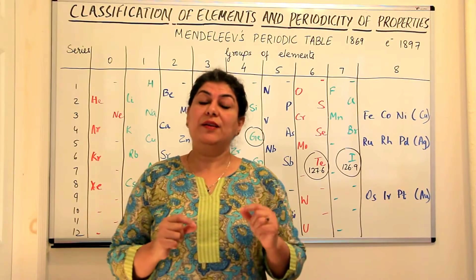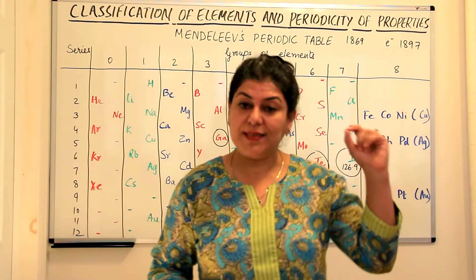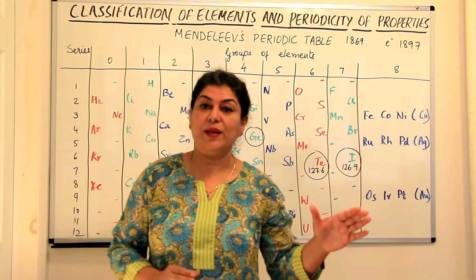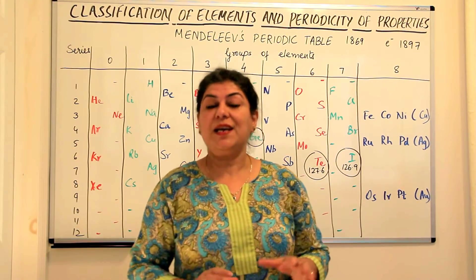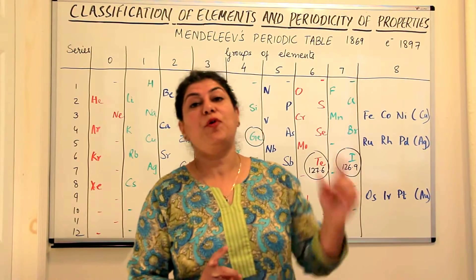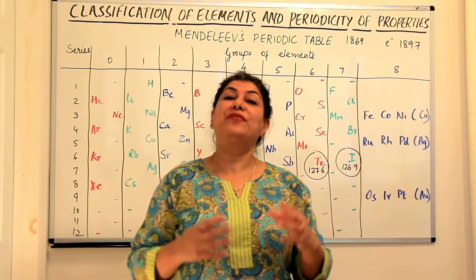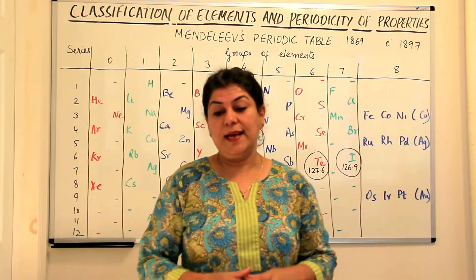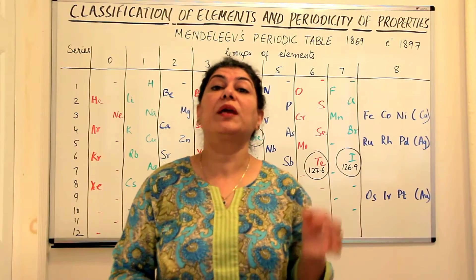Mendeleev said that if you arrange these elements according to their increasing atomic masses, we do find a periodicity — that is, we find that after certain intervals, the properties of elements are a repetition of the properties of the first one. But unlike Newlands, who said the properties are repeated after every eighth element, Mendeleev said the periods are not fixed. So Mendeleev gave the first law, known as Mendeleev's periodic law, which stated that the properties of elements are a periodic function of their atomic masses.